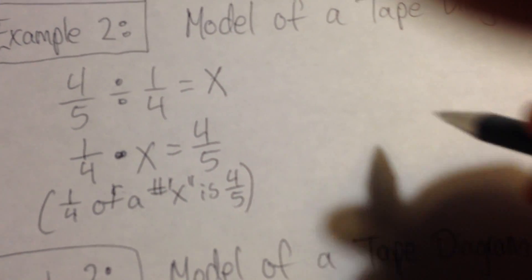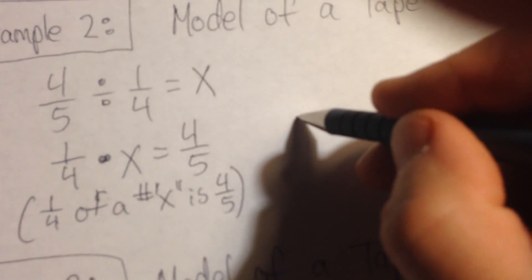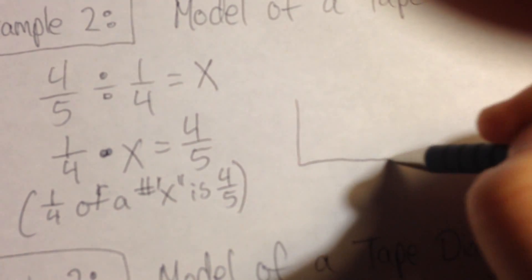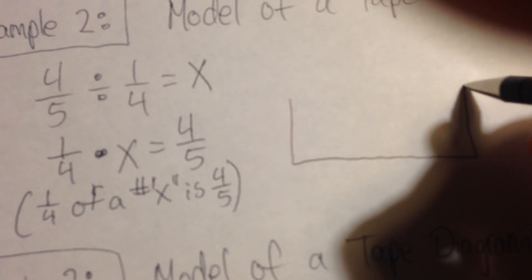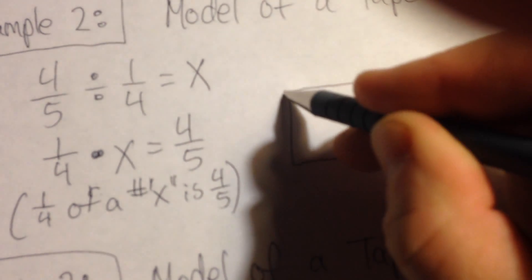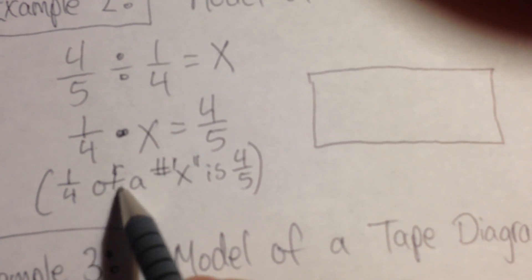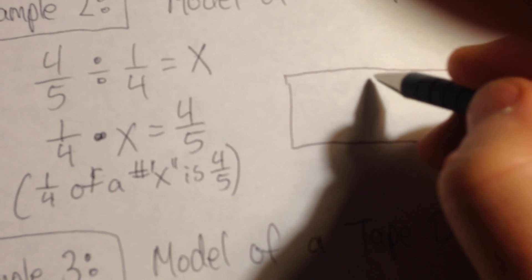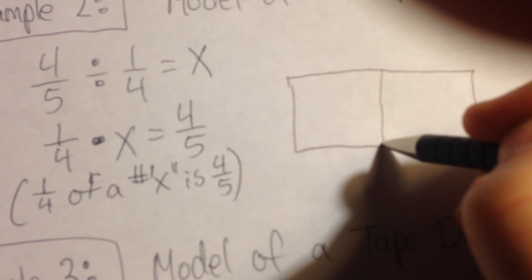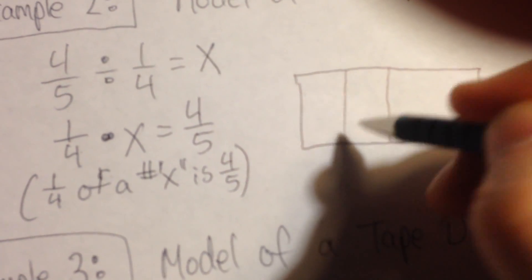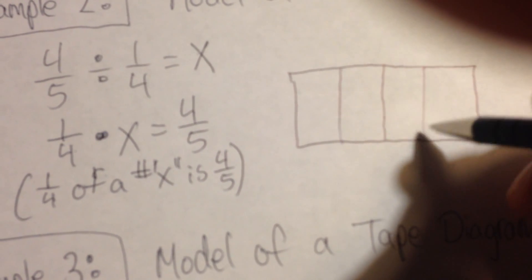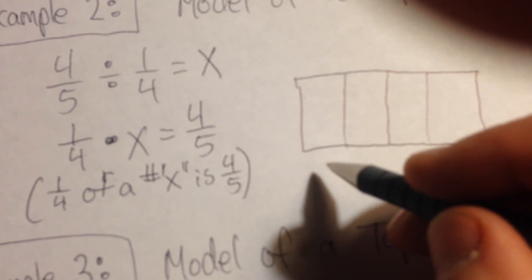When we go to draw this, we'll use our tape. It's always good to use a rectangle. Rectangles are the best. And this says that we have one-fourth. So we're going to draw fourths. Bring it in half, break each half in half. We have fourths.